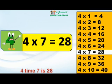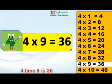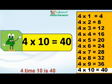4 times 7 is 28. 4 times 8 is 32. 4 times 9 is 36. 4 times 10 is 40.